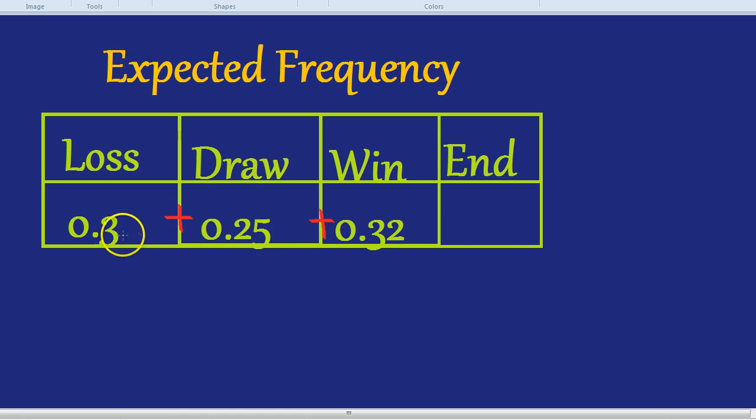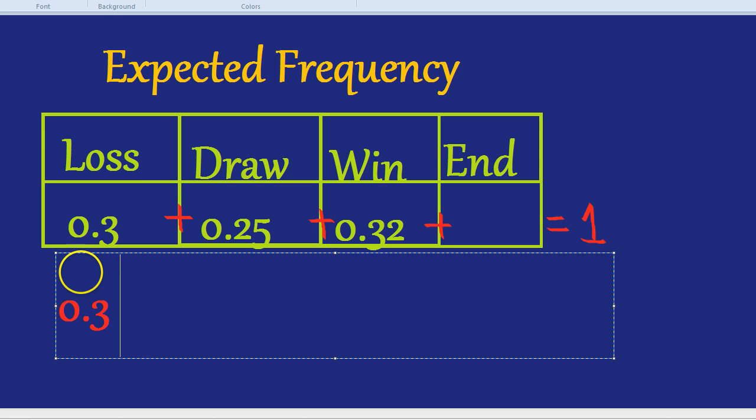So here, the chances of losing plus the chances of drawing plus the probability of winning plus the probability of the game ending must equal 1. Let's quickly work that out. So we have 0.3, add 0.25, add 0.32, plus a mystery number equals 1.